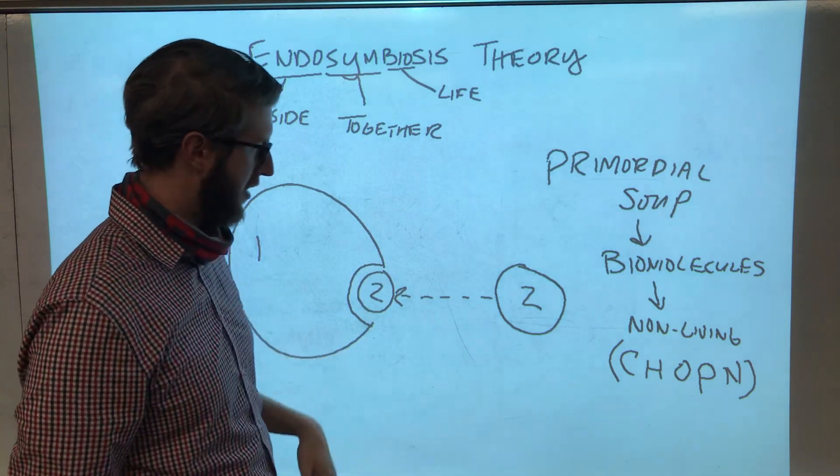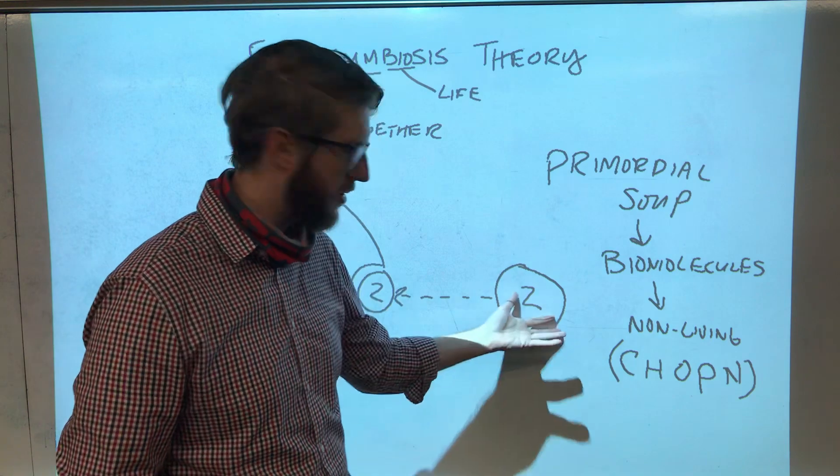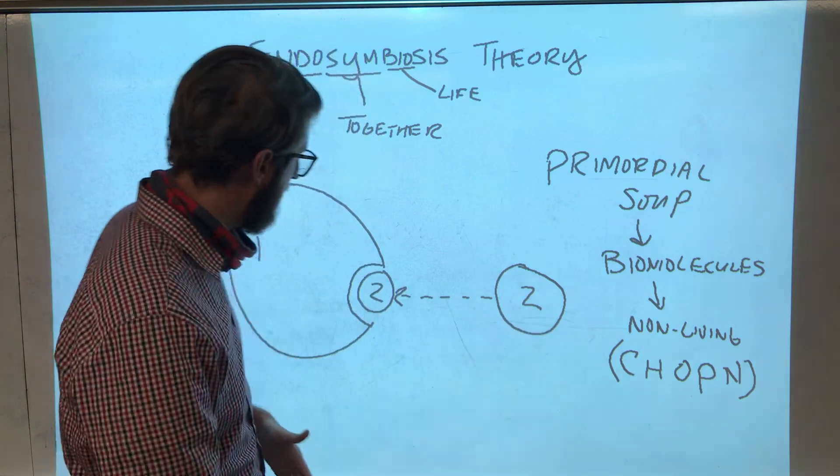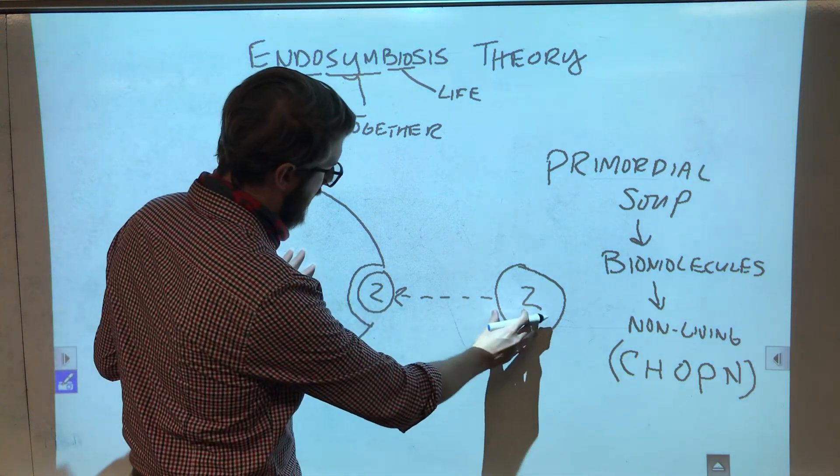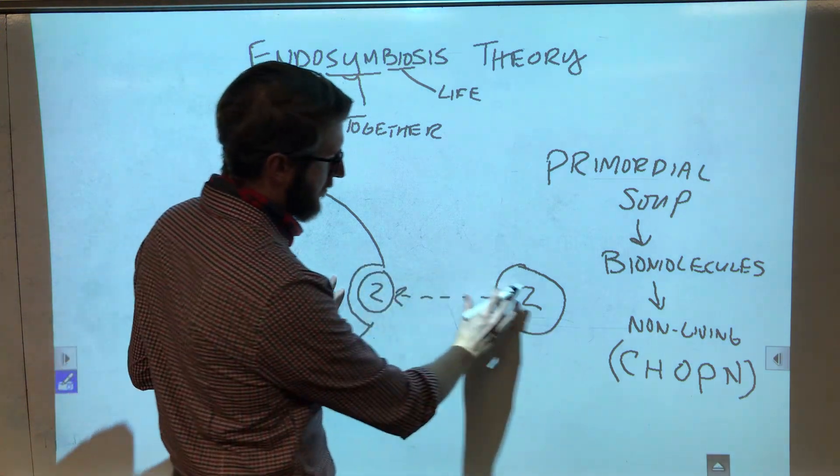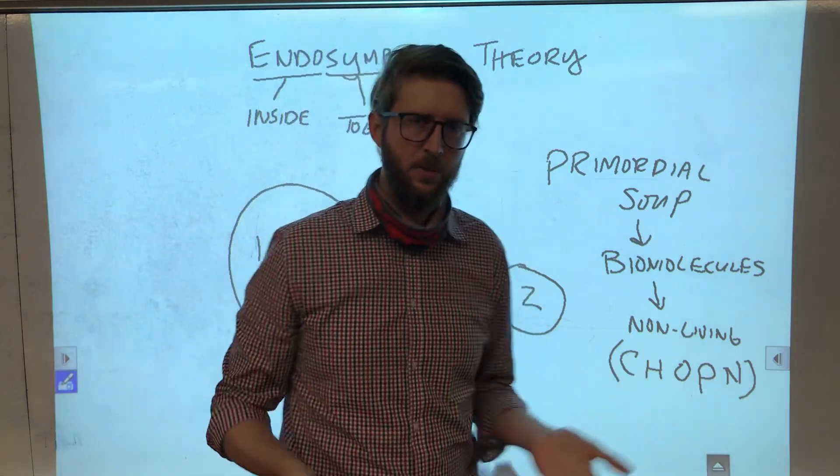The early cells had to continue living, and perhaps they took nutrients from their environment, even from other cells if they had to, in order to stay alive. And so, maybe big cell one came across little cell two someday while he's just floating around doing what he normally does, and then he eats this guy.